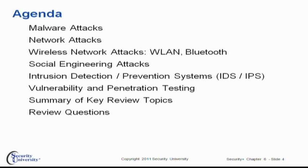Our agenda for this chapter: first, we're going to look at the dreaded malware attacks. Then we're going to expand and look at different types of attacks that could be launched against any type of network environment. Then we move into the land of wireless, where we look at WLAN and Bluetooth attacks. Then we go to a more personable approach towards attacks — versus using technology, let's play psychological games with people — and this can entail things such as phishing, spear phishing, and whaling. Sounds like we're going on a big fishing expedition.